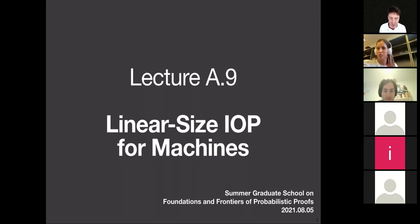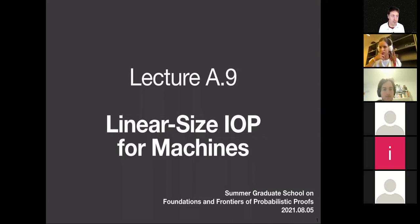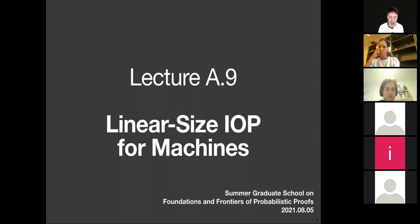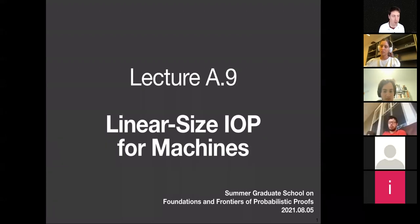Welcome everybody to lecture 8.9. Last time we saw a first construction of a linear size IOP. We targeted a specific problem which was arithmetic circuit satisfiability, and more precisely an NP-complete language called R1CS — rank one constraint satisfiability. The core of the construction was a univariate sum check because we arithmetized the computation using univariate polynomials.